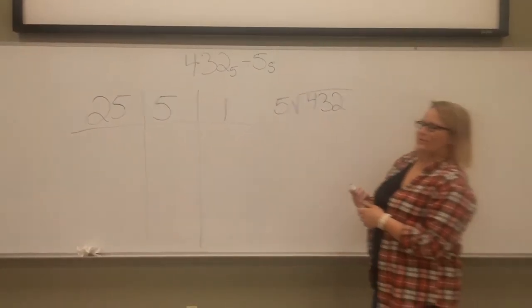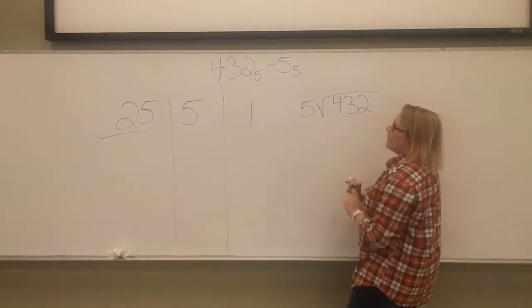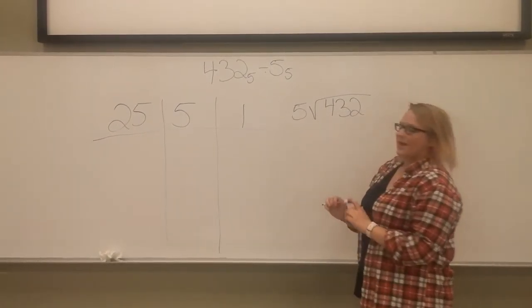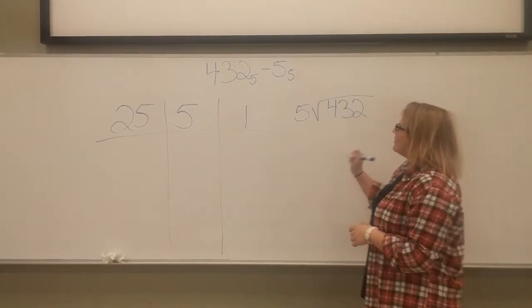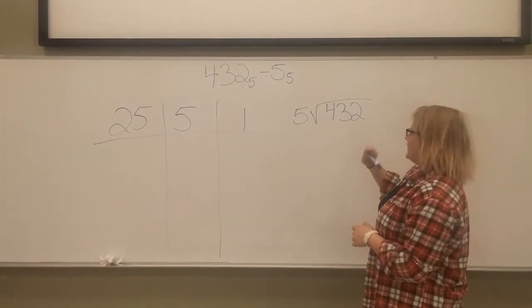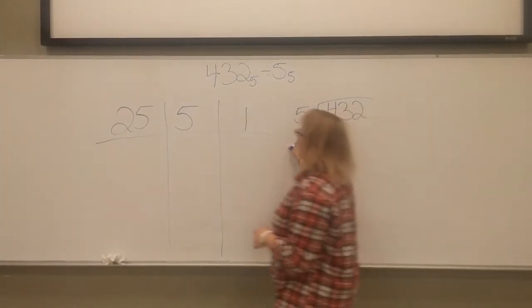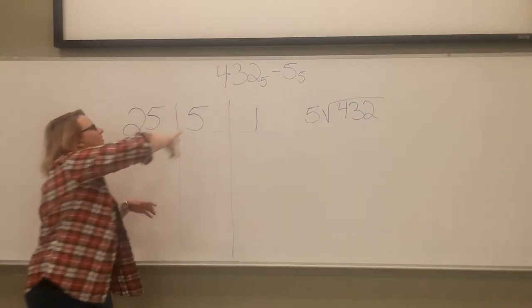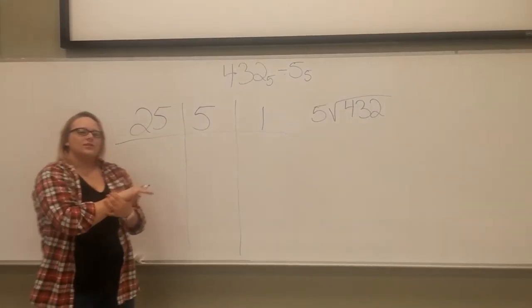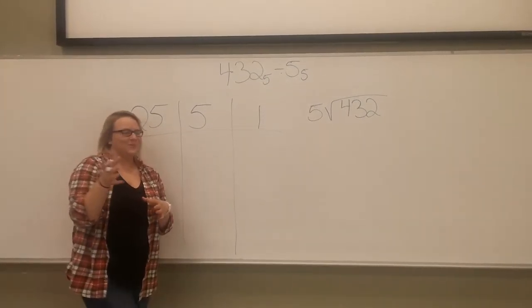We're dividing 432 base 5 by 5 base 5. So you're sharing 432 evenly across 5 groups.